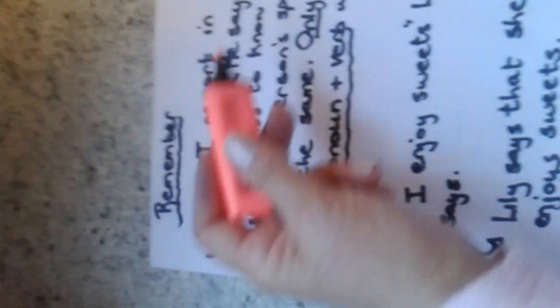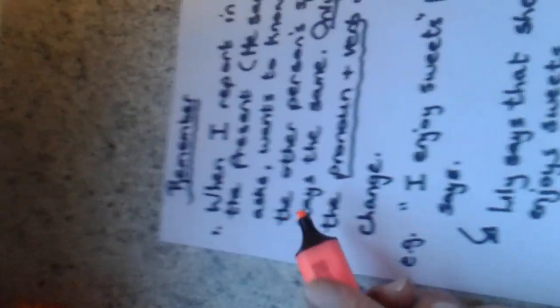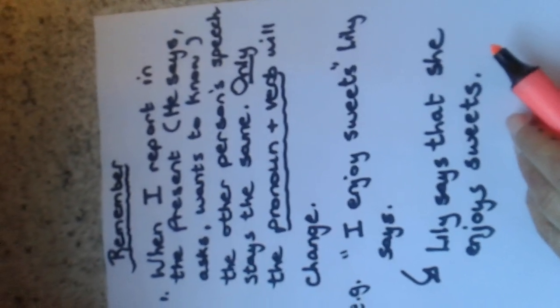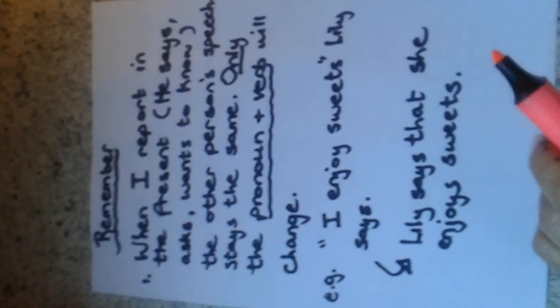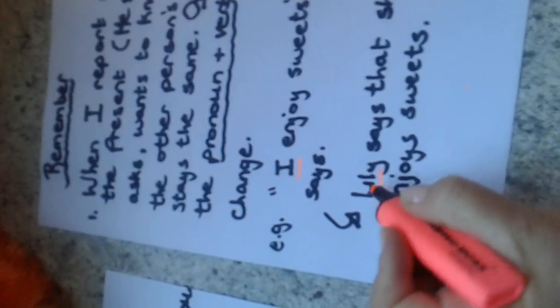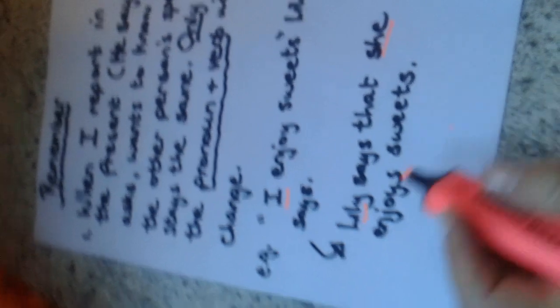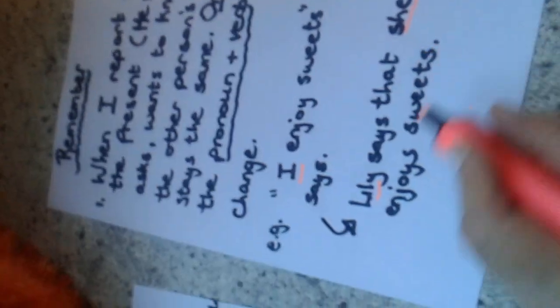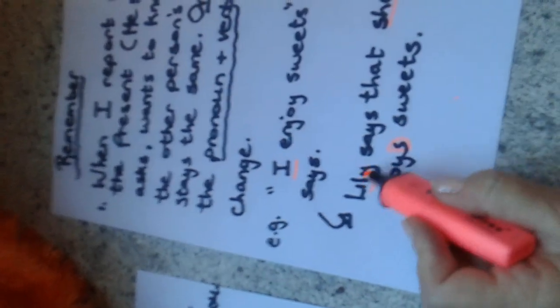If it is in the present — he says, he wants to know, he asks — then what the other person said, their direct words, which is usually in quotation marks, is going to stay basically the same in the same tense. The only thing that will change is the pronouns. Because Lily is speaking and it's a girl, the 'I' will change to 'she.' Lily says that she — and because she is one person, we always add an S for one person — so 'Lily says that she enjoys sweets' and the rest of the sentence stays the same.